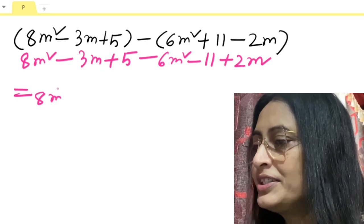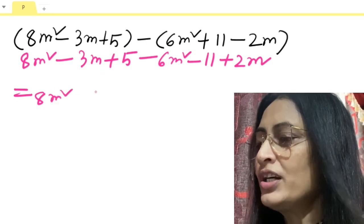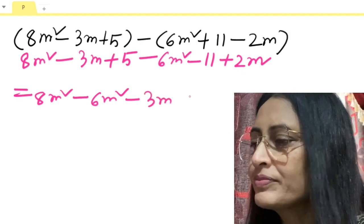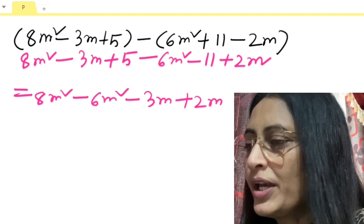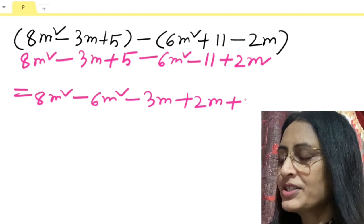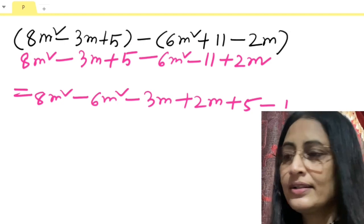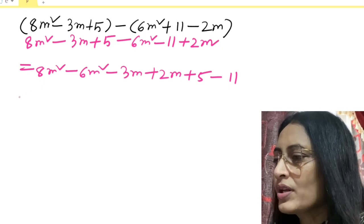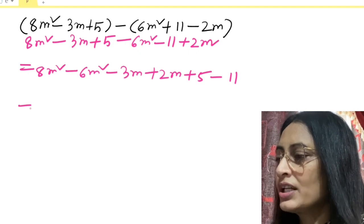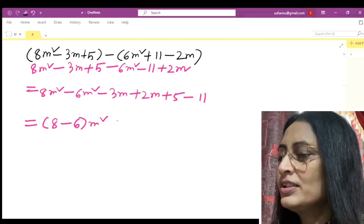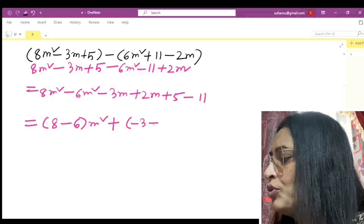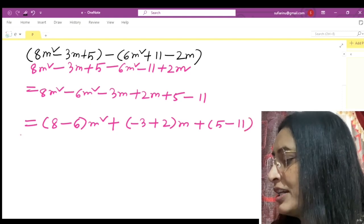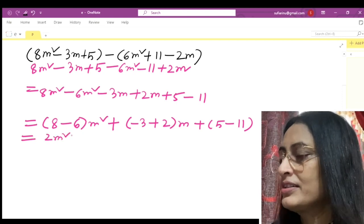We are arranging the like terms: 8m square minus 6m square, then 3m plus 5 minus 3m plus 2m, and constant terms plus 5 minus 11. Next, we will add the numerical coefficients as in the question. It is written by combining the like terms, so we will combine means add the like terms and constants as well.